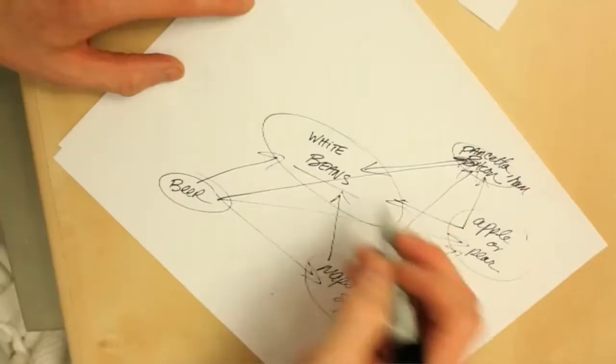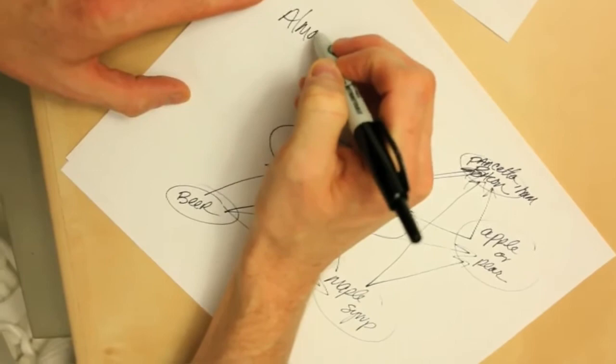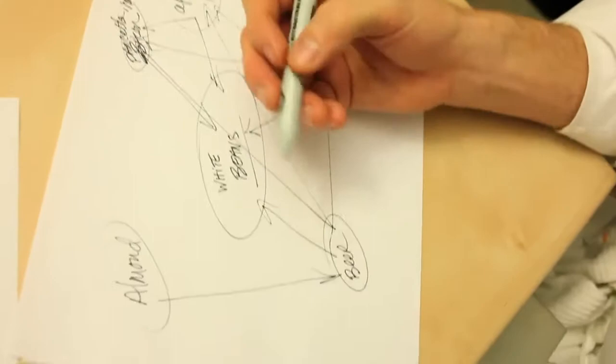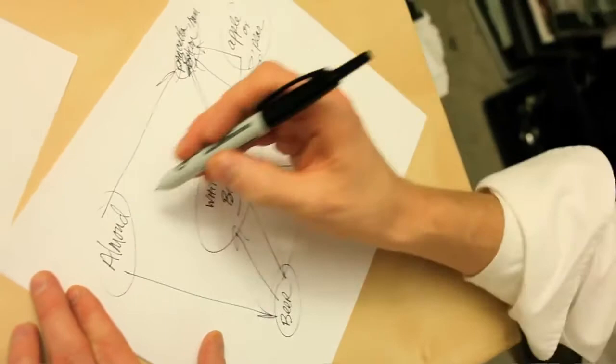So you keep going like this and you build the flavors this way, and you just keep bouncing them off each other. Beer and almonds? Yeah, when you're sitting at the bar, you eat salted almonds. Almonds with bacon? Sure.